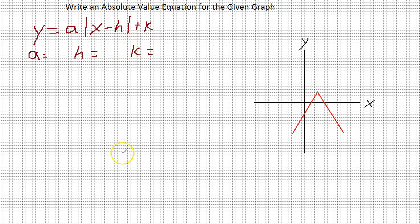So we can get an equation. How can we do that? We know that the vertex is h comma k.